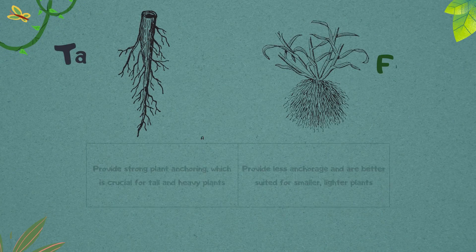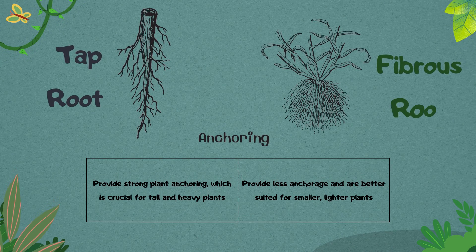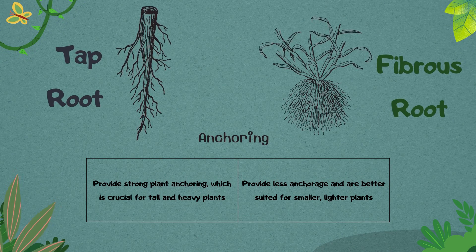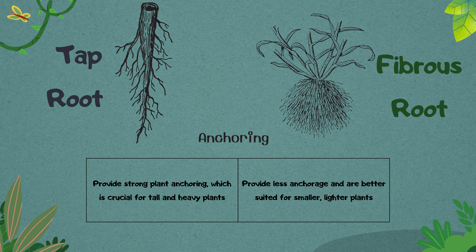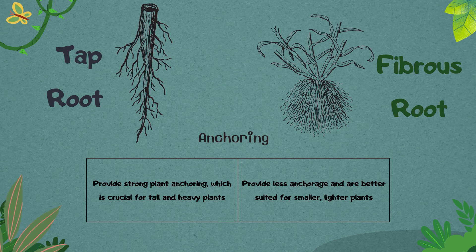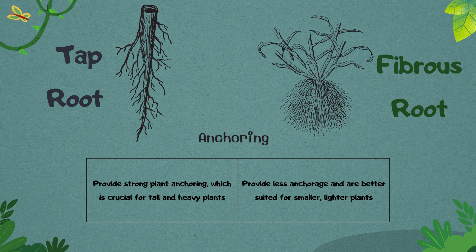Taproots give strong plant anchoring, which is crucial for tall and heavy plants, whereas fibrous roots provide less anchorage and are better suited for smaller, lighter plants.